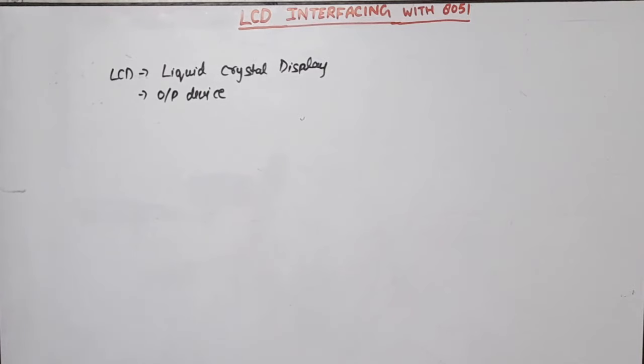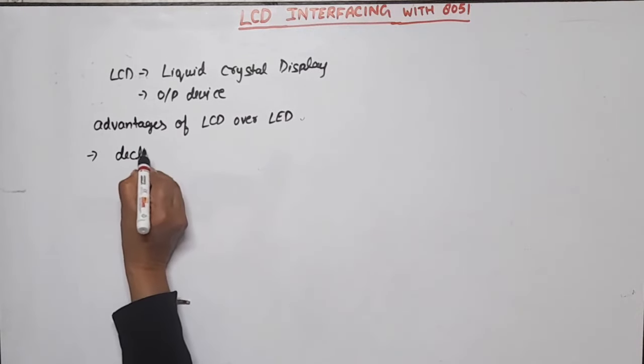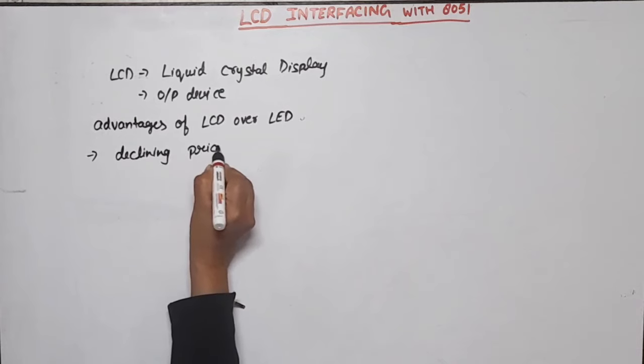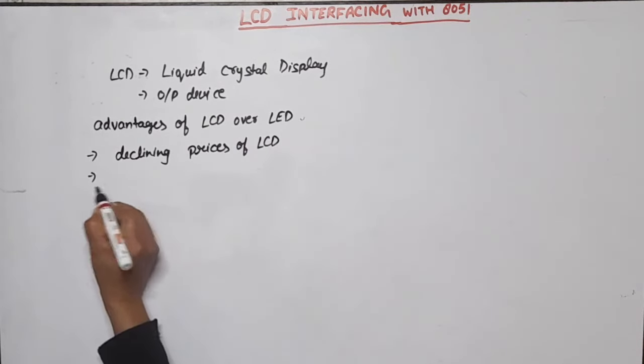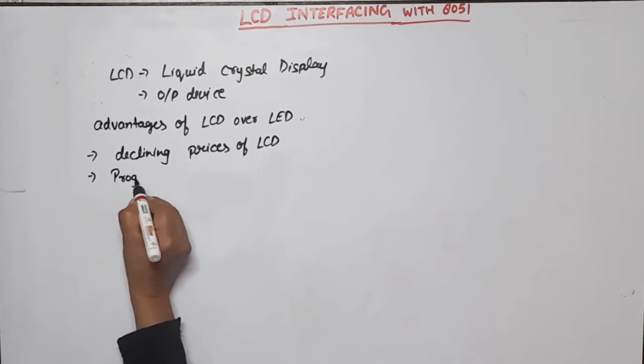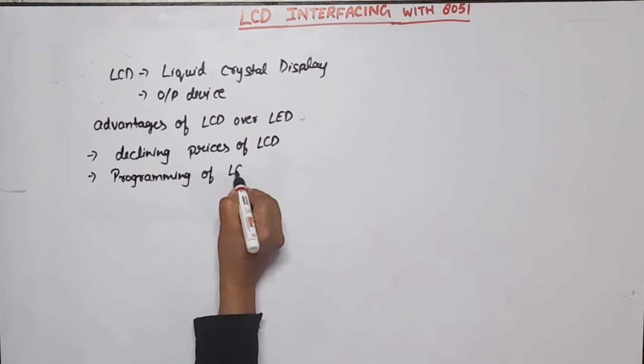It is more widely used in comparison to LED. Now, what are the advantages of LCD over LED? LED is the light emitting diode - it can be a seven segment LED or multi-segment LED. First advantage is declining prices of LCD. Second thing is programming of LCD devices is easy.